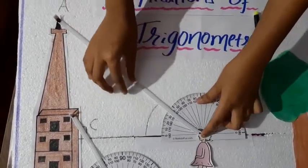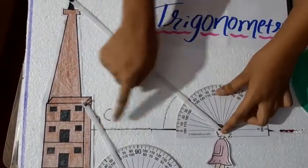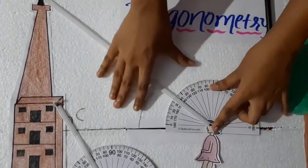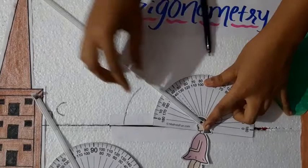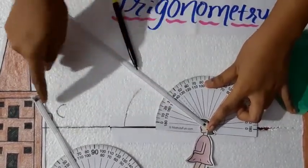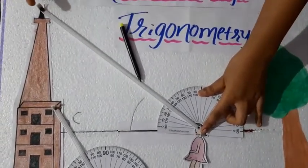Before, when she was here, the distance was this much. From here to here. And when she goes back, then the angle of elevation is decreased. But the distance is increased. By this, again, we get the same height. Because height cannot be changed.